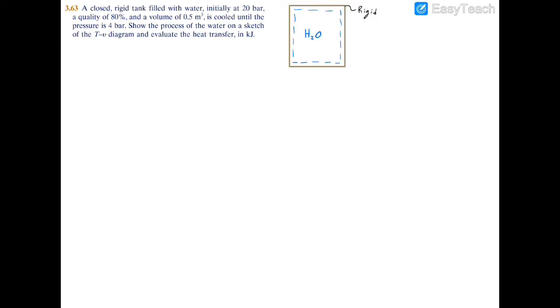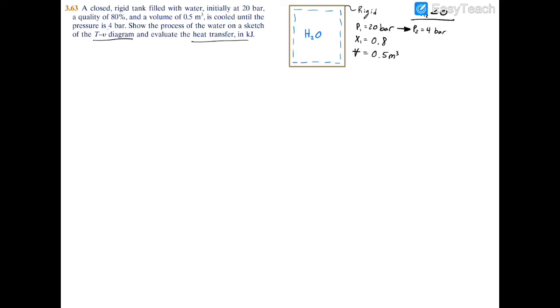Here we have another fairly simple problem. We have a rigid tank filled with water. We're told that we're initially at 20 bar, a quality of 80%, and a volume of 0.5 cubic meters. And then, key word, we are cooling down to a pressure of 4 bar. We're asked to sketch this process on a TV diagram and also evaluate the heat transfer, Q12, in kilojoules.